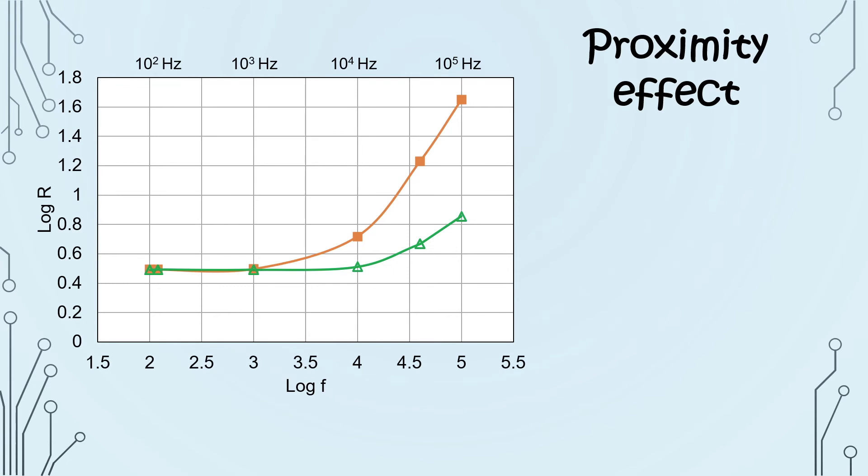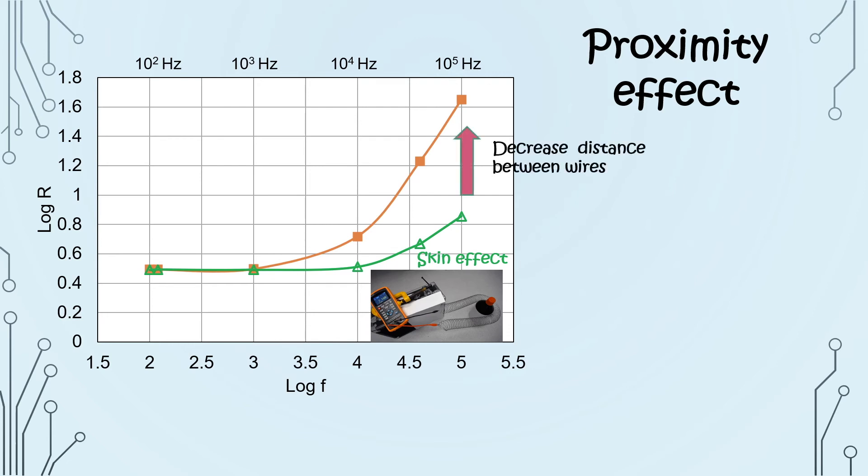Let us plot our data to see how big are the different effects on the resistance of the wire. When the wires are far apart, only skin effect is observed. When we decrease the wire distance, resistance increases because we now have both skin and proximity effects. Both effects depend on the applied frequency of the signal.